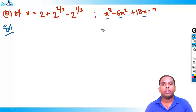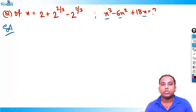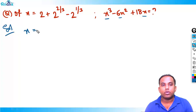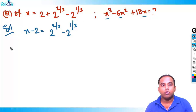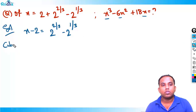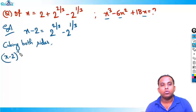We observe that the required expression has decreasing powers of x — x³, x², and x — and the given expression involves 2^(2/3) and 2^(1/3). We rearrange: x - 2 = 2^(2/3) - 2^(1/3). To get the cubic term, we cube both sides: (x - 2)³ = (2^(2/3) - 2^(1/3))³.